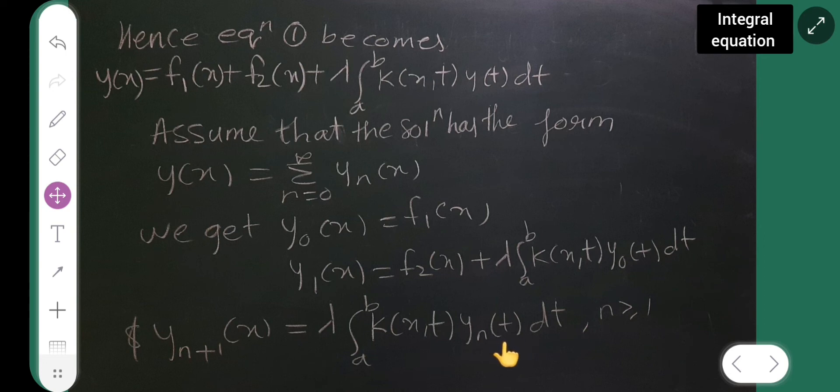So, if it is 2, N is 2, then this will be 2, right? Because this is 2 plus 1, it will become 3. If it is 1, then this will be also 1. And here it will be 2, right? Then, DT. So, remember this, N is greater than or equal to 1.